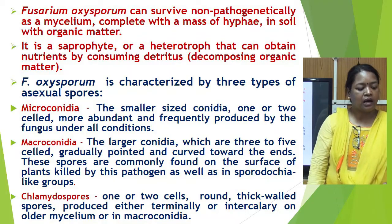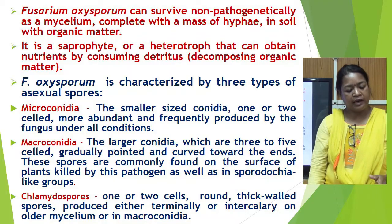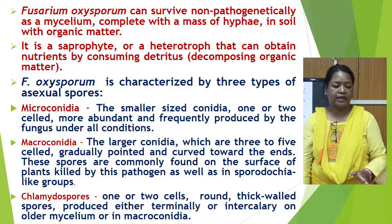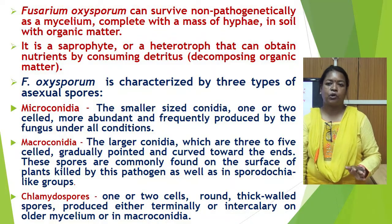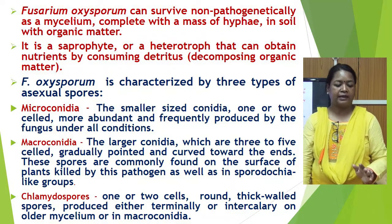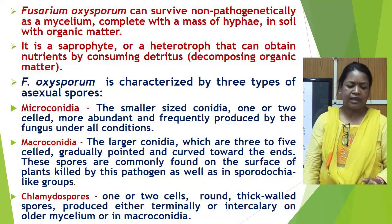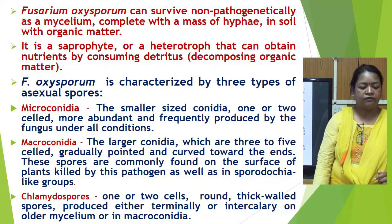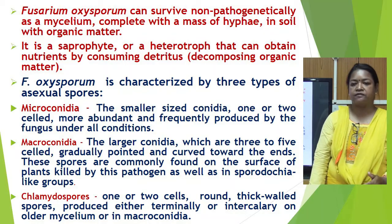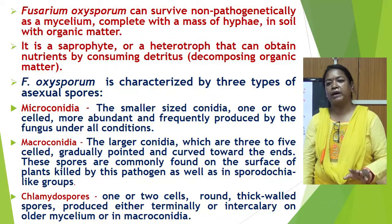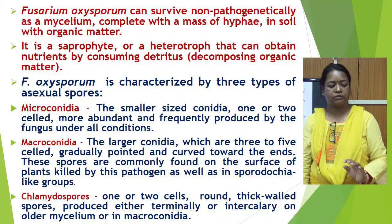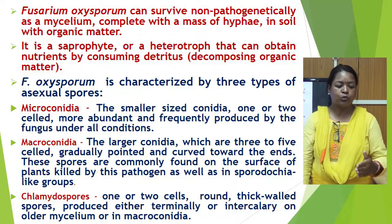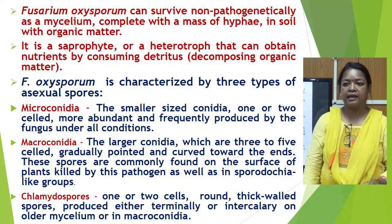Fusarium oxysporum survives non-pathogenically as mycelium in soil with organic matter. It is a saprophyte or heterotroph that can obtain nutrients by consuming decomposing organic matter. It is characterized by three types of asexual spores. Microconidia are smaller, one or two celled, more abundant and frequently produced under all conditions. Macroconidia are larger, three to five celled, gradually pointed and curved towards the end, commonly found on the surface of plants killed by this pathogen as well as in sporodochial groups.